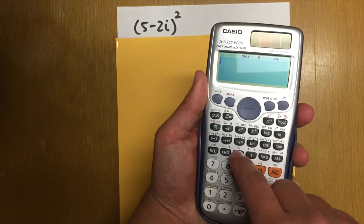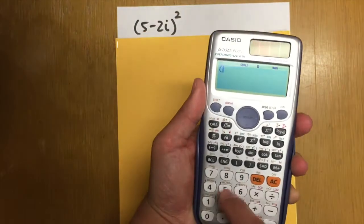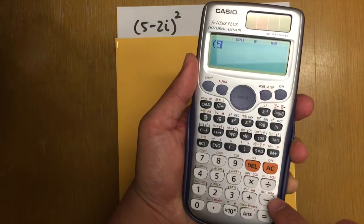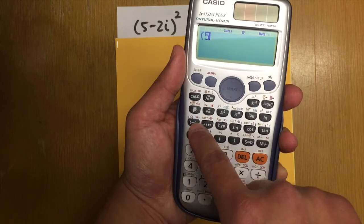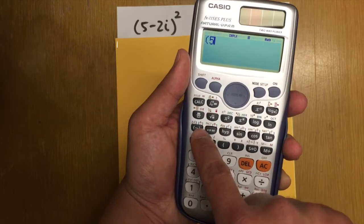Right here, we have to enter the parentheses and then the 5. And this is a minus. Use this for the minus. Okay? If you use the negative right here, you'll get syntax. That means you press something wrong. Let me show you.